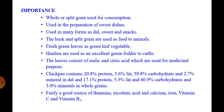Leaves of chickpea consist of malic and citric acid, which are used for medicinal purposes — specifically for stomach ailments and as a blood purifier. Chickpea grain contains 20.8% protein, 5.6% fat, 59.8% carbohydrate and 2.7% minerals in dal, while whole grain contains 70.1% protein, 5.3% fat, 60.9% carbohydrates and 3% minerals. It is a fairly good source of thiamine, nicotinic acid, calcium, iron, vitamin C and vitamin B1.